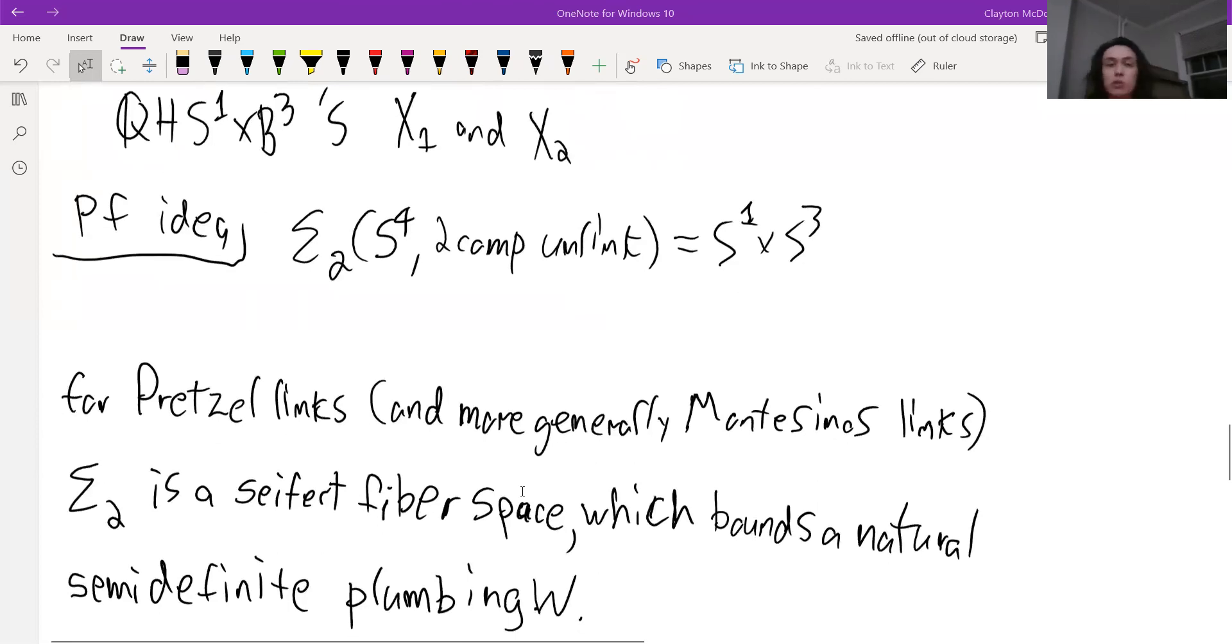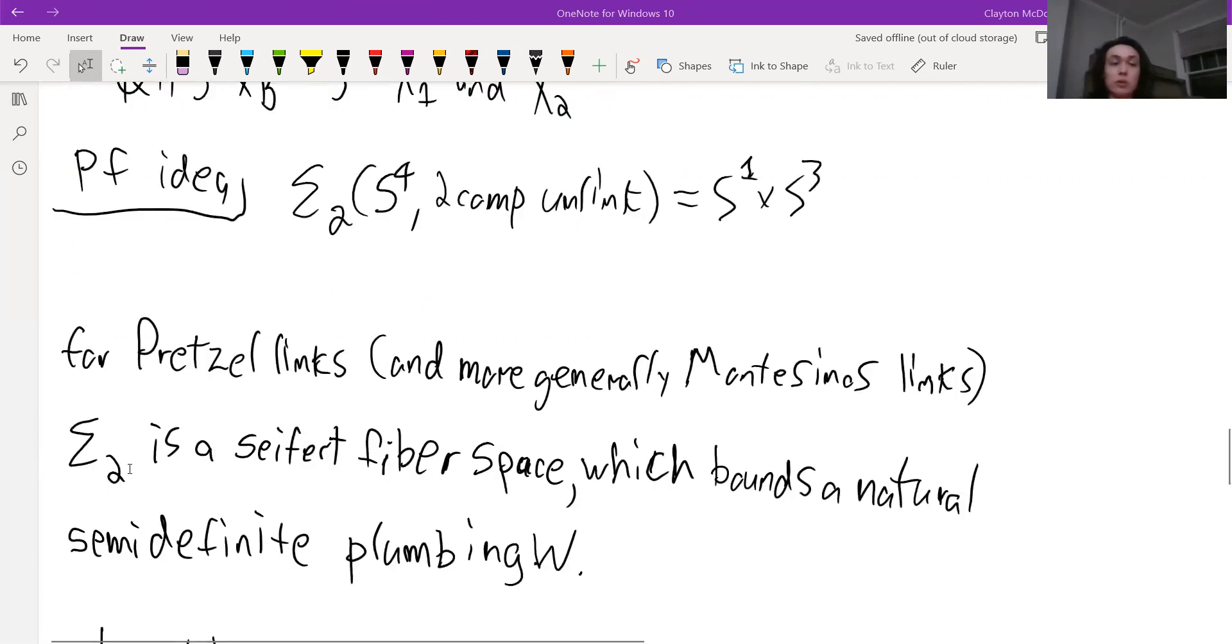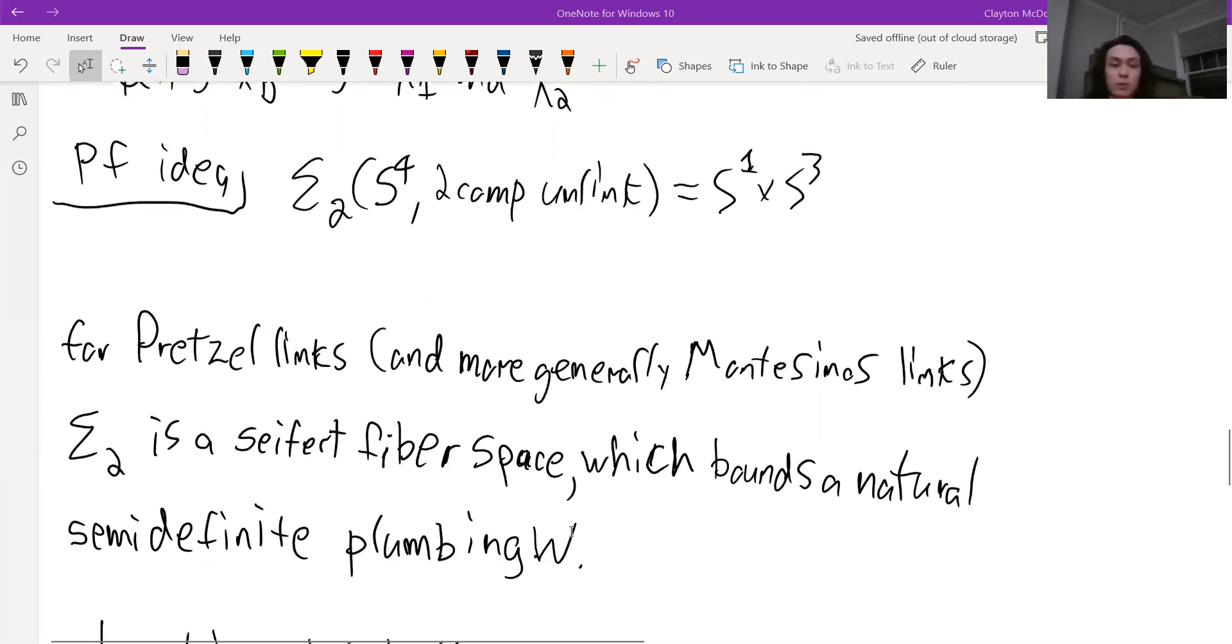So for pretzel links and more generally Montesinos links, we also know that this double branch cover is a Seifert fiber space, which bound these natural semi-definite plumbings, which we'll call W.